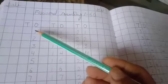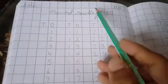So you have to write the forward counting 1 to 60. Clear? And when you write the counting you should revise it.